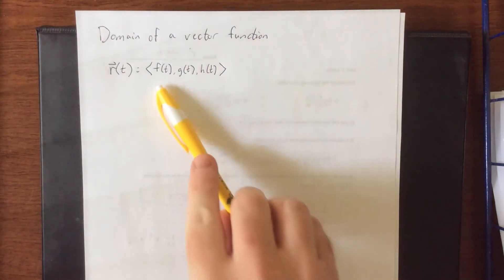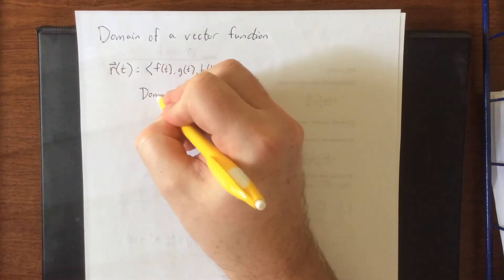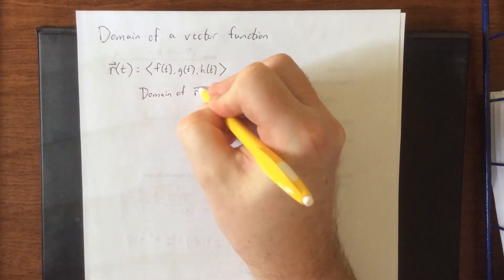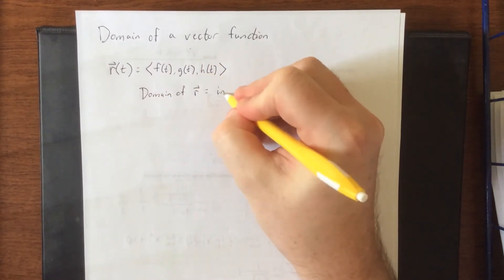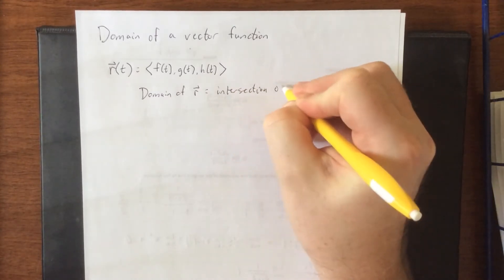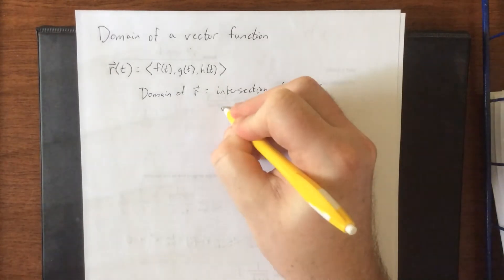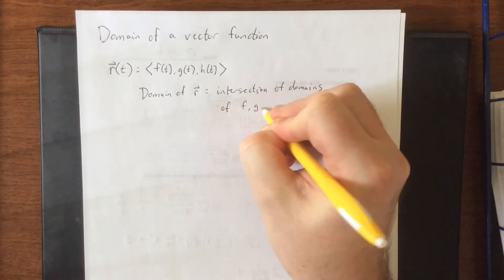So there are going to be three component functions associated with this, f of t, g of t, and h of t. The domain of r is going to be equal to the intersection of the domains of f, g, and h.